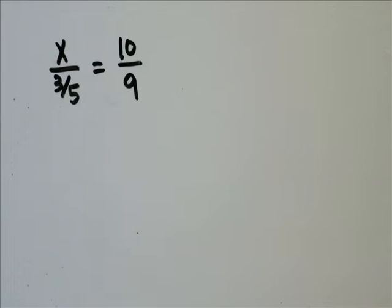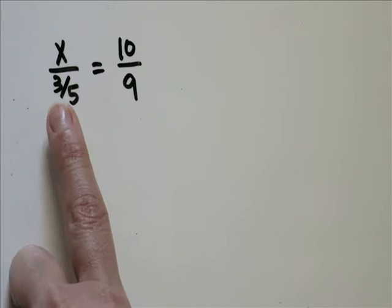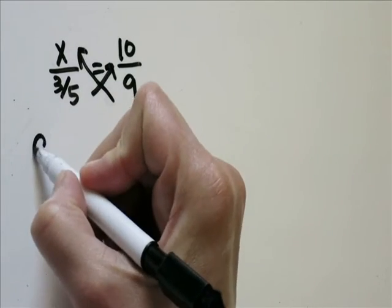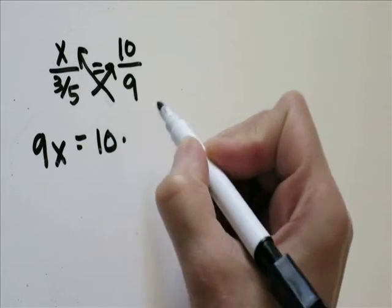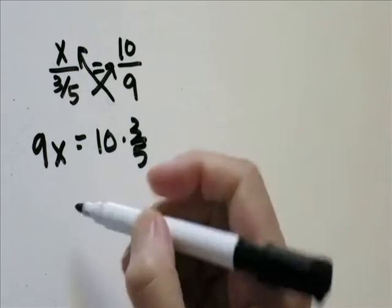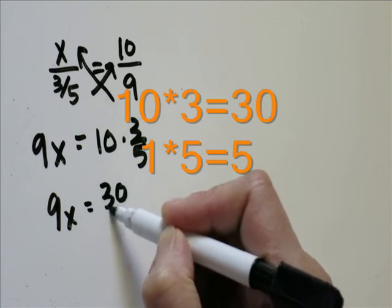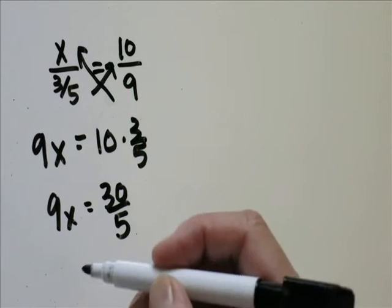Problem 22, x over 3 over 5 equals 10 over 9. Now a lot of people are going to see the fraction down here and freak out, but it's not that hard. I'm just going to cross multiply everything. That would give you 9x equals 10 times 3 fifths. You'll have 9x equals 30 over 5. 30 over 5 is going to equal 6.